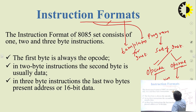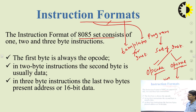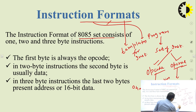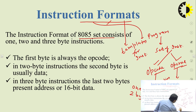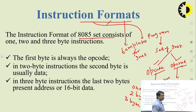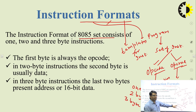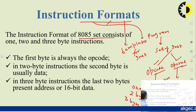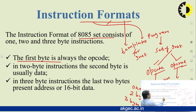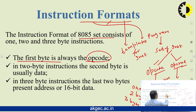The Intel 8085 microprocessor has instruction formats in three sizes or three types: one byte, two byte, and three byte. In the one-byte instruction format, the first byte will always be the opcode, and this opcode will be of size one byte or eight bits.